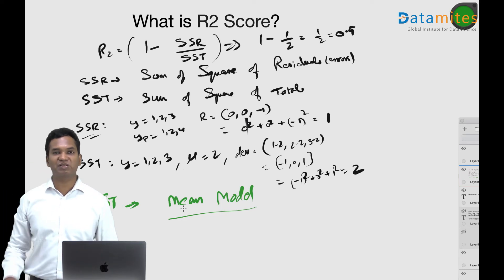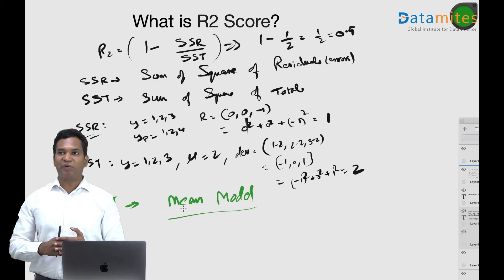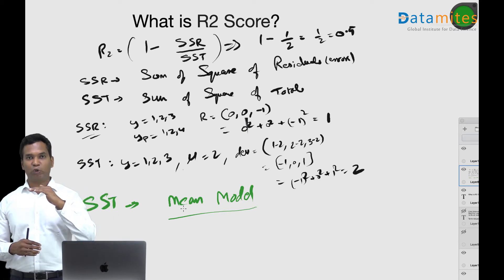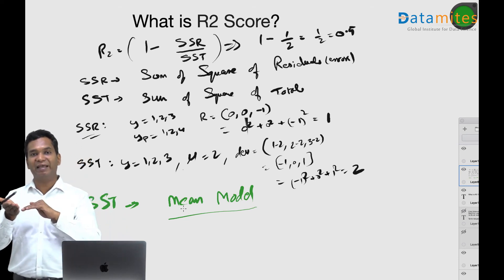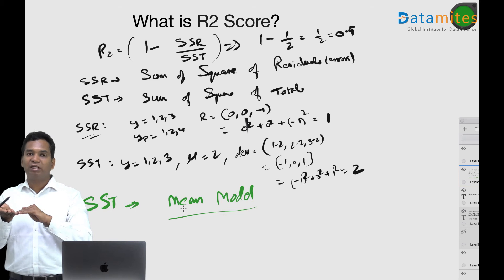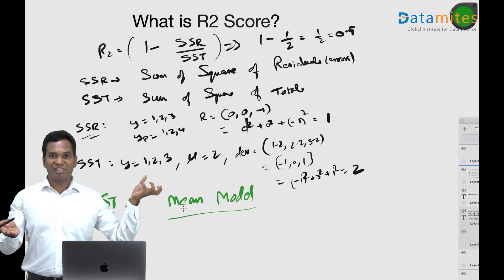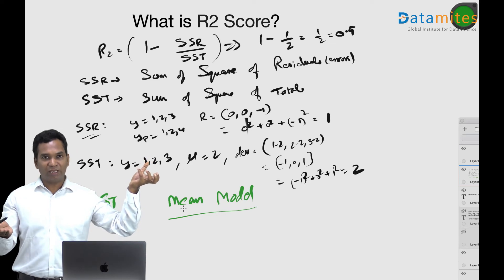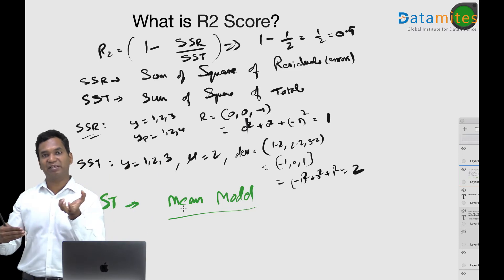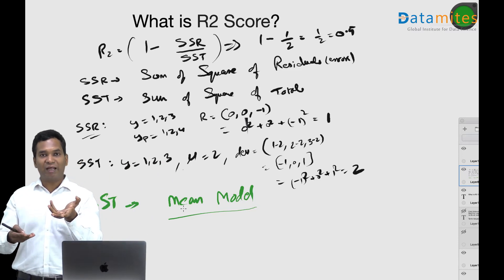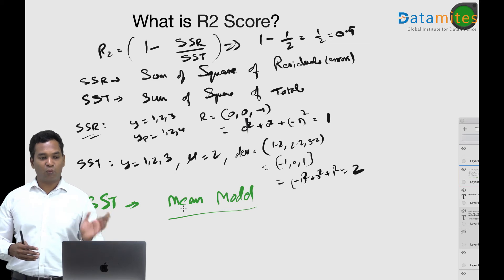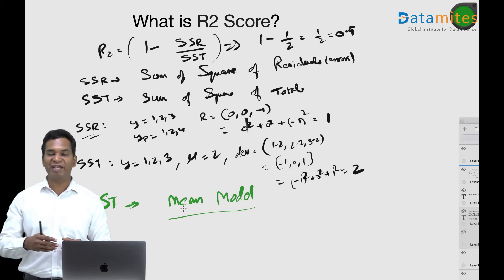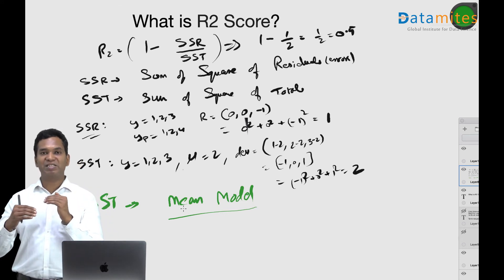Mean prediction is a base reference for any prediction, also called the mean model. SSD is essentially the error of the mean model. What we're doing with R2 is comparing the machine learning model's error (SSR) to the mean model's error (SSD). The ratio SSR/SSD represents the ML model error relative to the mean model, and one minus that ratio tells you how much better your model is compared to the mean model.